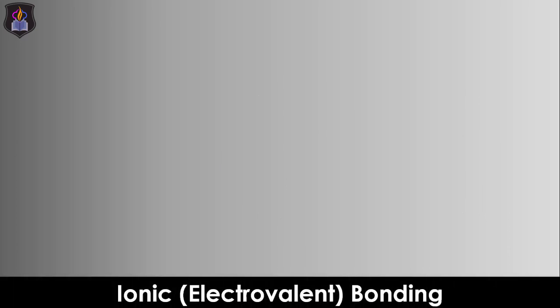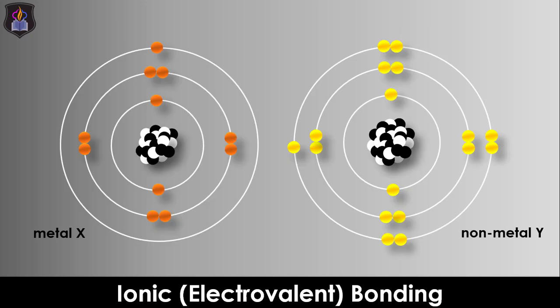Ionic or electrovalent bonding is the chemical combination that occurs between a metal and a non-metal. It involves the complete transfer of valence electrons from the metallic atom called the electron donor to the non-metallic atom called the electron acceptor which leads to the formation of oppositely charged ions.